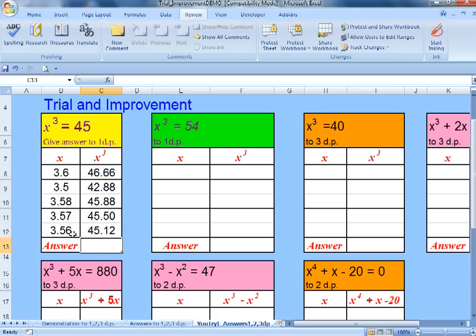If you entered something more accurate like 3.56 it doesn't turn green because it's only asking for one decimal place. If you enter 3.6 to one decimal place that's correct.